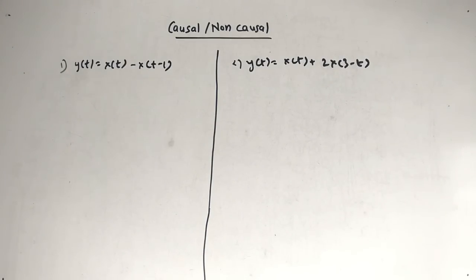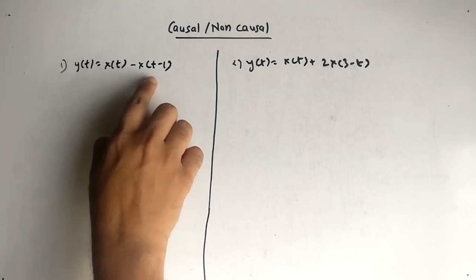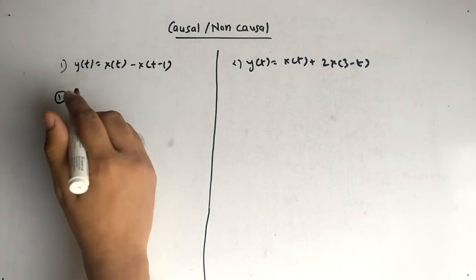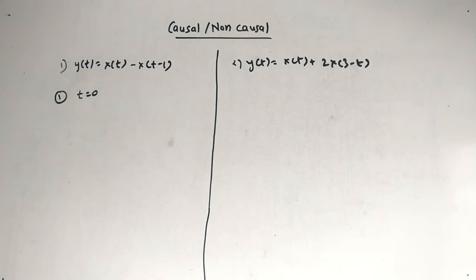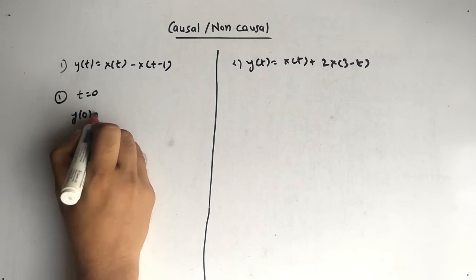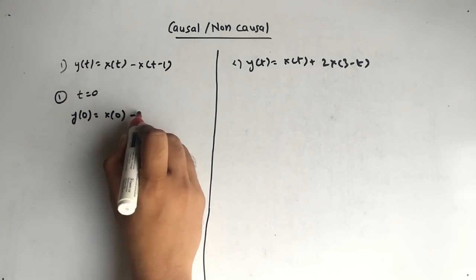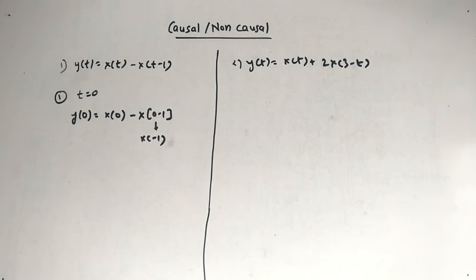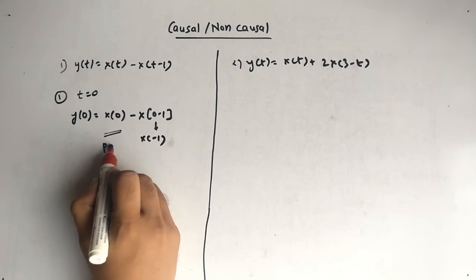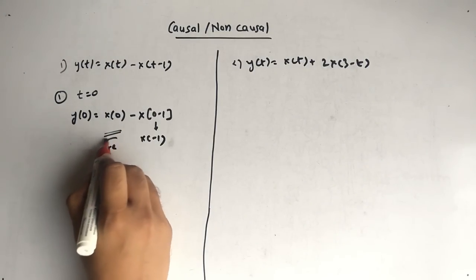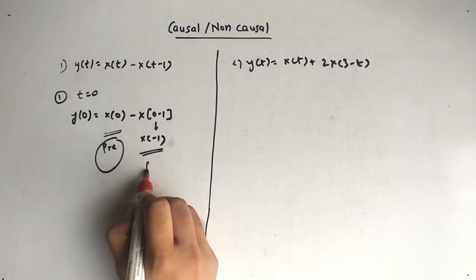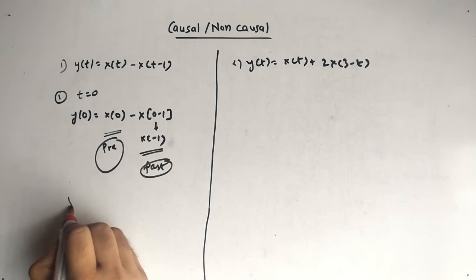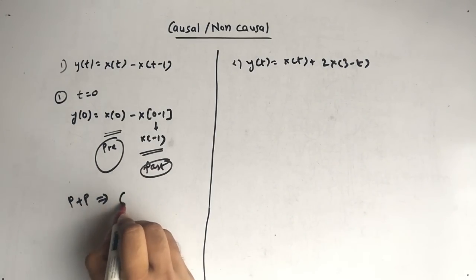Our first question is y(t) = x(t) − x(t−1). The equation is in y and x. Now we put t equal to 0. After putting t equal to 0, we get y(0) = x(0) − x(0−1), which is x(−1). So we are getting present value and past value. This combination — present plus past — means it is a causal system.